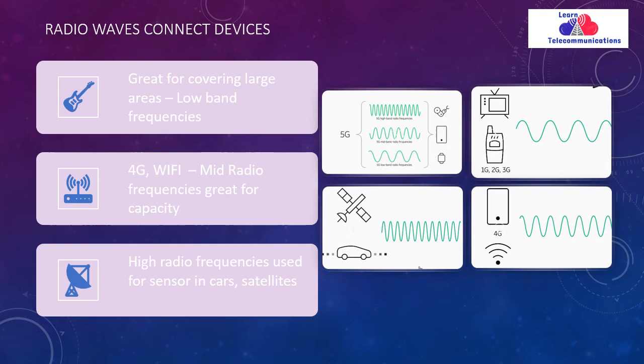Now let's talk about the radio waves that 5G uses. 5G uses lower band, mid band, and higher band frequencies. The lower band is used for TV broadcasting and mobile communication across all generations — 1G, 2G, and 3G — and is meant for good coverage over larger areas.